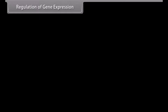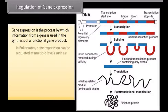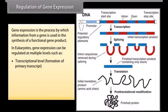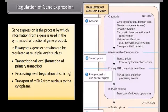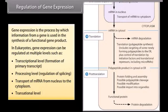Regulation of gene expression is the process by which information from a gene is used in the synthesis of a functional gene product. In eukaryotes, gene expression can be regulated at multiple levels such as transcriptional level, formation of primary transcript, processing level, regulating of splicing, transport of mRNA from nucleus to the cytoplasm, translational level, and positive and negative regulation.